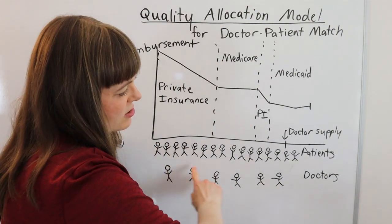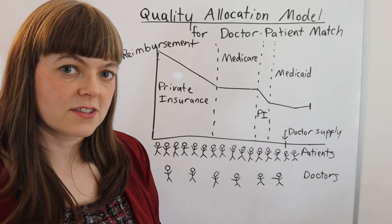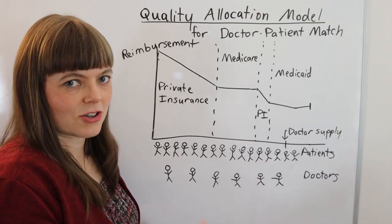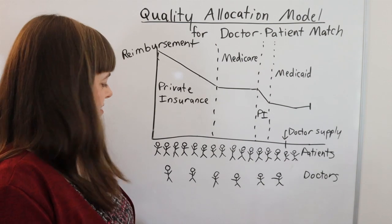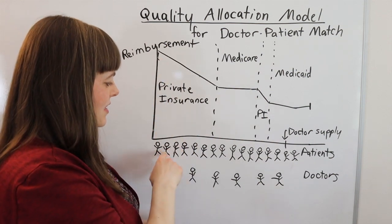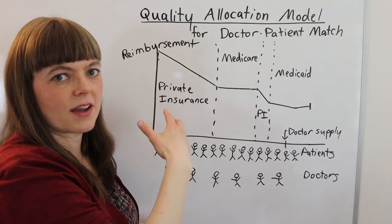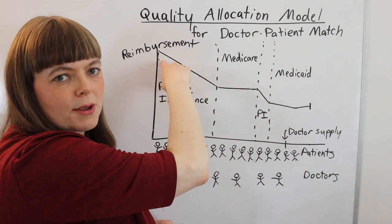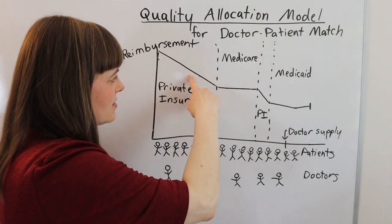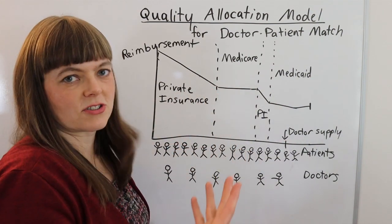Imagine the patients are lined up according to the reimbursement rate for their health insurance. This patient here has the very highest quality health insurance that reimburses doctors a lot. This patient here has the second best insurance reimbursement rates, and so on. They're lined up in that order — reimbursement rate is roughly the dollar reimbursement per hour of the doctor's time on average, mapped as a downward slope across many different insurance companies.